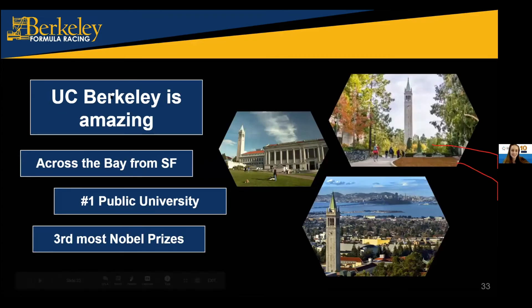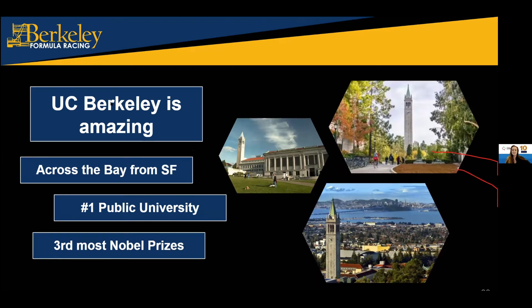Berkeley is absolutely amazing and an incredibly diverse school. It's across the Bay from San Francisco. You can see the view from Berkeley up on the hill of San Francisco — if you're in the right dorm, you can see SF in the distance. We are the number one public university — if you come to Berkeley, you will hear that said a lot. We also have the third most Nobel Prizes of any institution, and we even have parking spots on campus reserved for Nobel Prize winners.